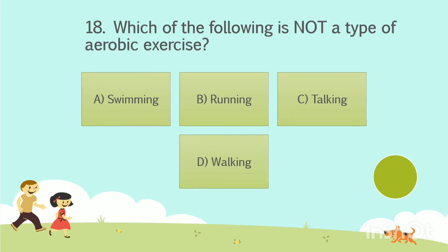To the 18th question now. Which of the following is not a type of aerobic exercise? Option A: Swimming. Option B: Running. Option C: Talking. Option D: Walking. Your time starts now. The answer is Option C: Talking.